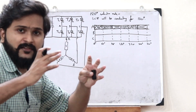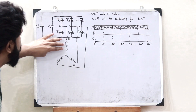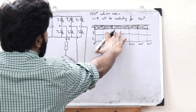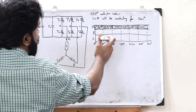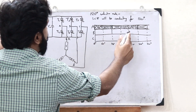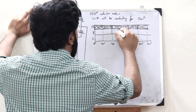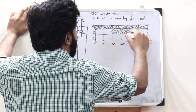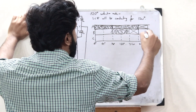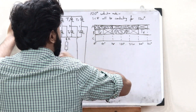Now let us see the case of phase B. In a three-phase inverter, the second phase is at a phase difference of 120 degrees from the first. So the switch for phase B is turned on 120 degrees after phase A — that is, from 120 degrees. For the first 120 degrees, switch T3 is turned on, and for the next 60 degrees it is turned off. Then for the next 120 degrees, switch T6 is turned on, followed by another 60 degree off period.